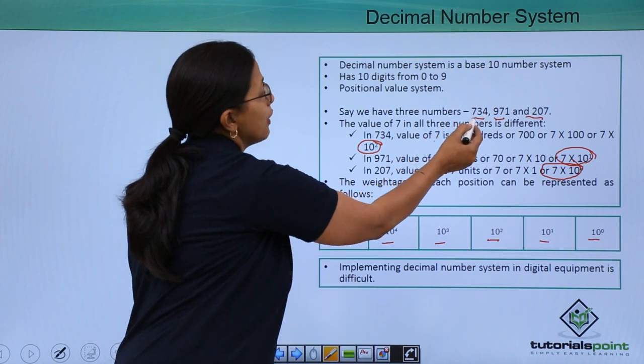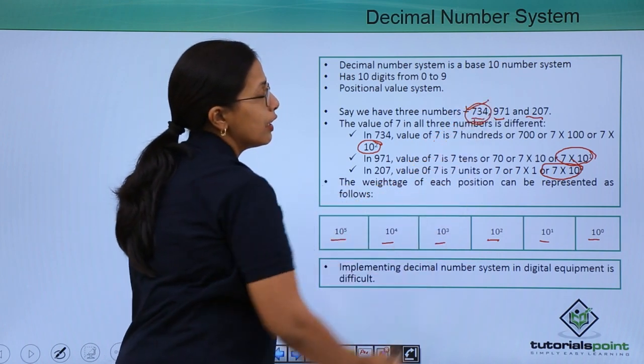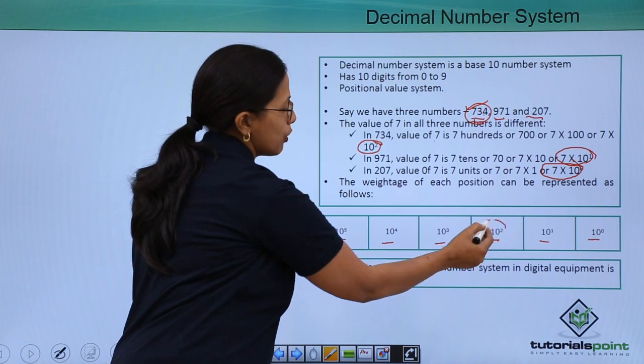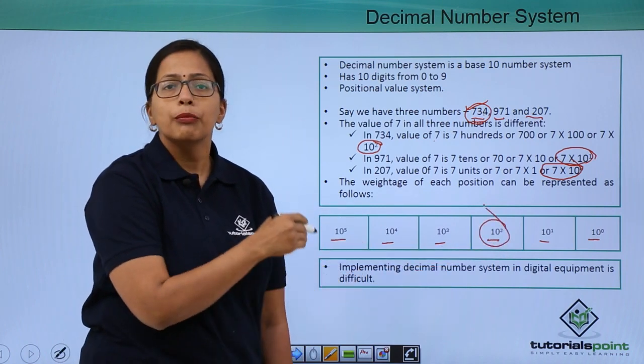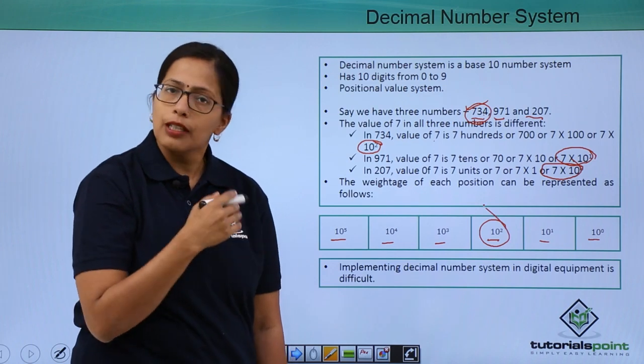So here in 734, the position of 7 is second, 0, 1, 2. So 7 into 10 to the power of 2. This is how the positional number system works.